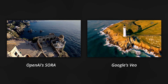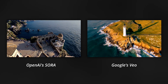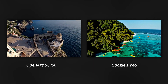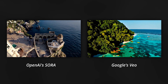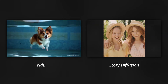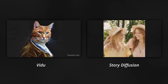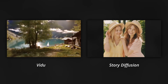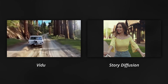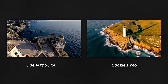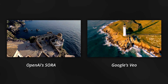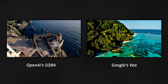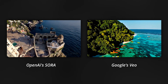Sora has the remarkable ability to generate high-quality videos up to a minute in length while accurately adhering to the user's prompt, a feat not achievable with existing AI video models like Runway and Pika. While models such as Vido and Story Diffusion can produce long videos while maintaining character consistency, they lack the superior quality seen in Sora. Upon reviewing preview videos of Veo, I believe it comes closest to matching Sora's capabilities, exhibiting exceptional quality with Full HD resolution and the capacity to exceed a minute in length.